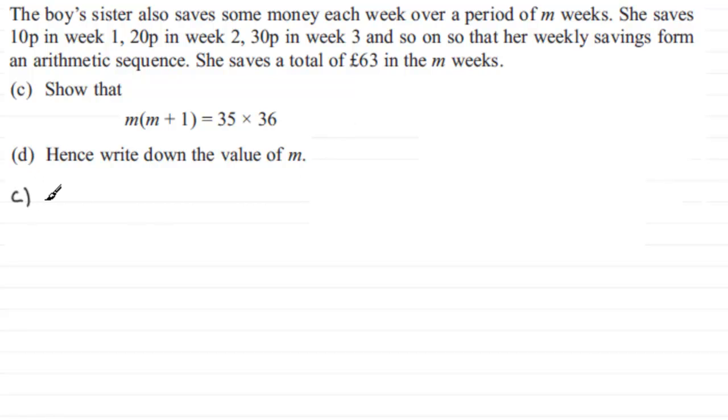Well, for part C, we know that she saves 10p in the first week, and then if we add to this what she saves in the second week, which is 20p, and then in the third week, 30p and so on. Now she keeps saving amounts of money that go up by 10p each week over the period of m weeks. So if we just write that as m weeks, we know that the sum of all these values comes to £63. But we're working in pence here, so we've got to change this to 6,300 pence.